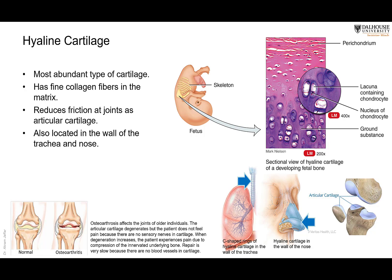In the adult, hyaline cartilage is present in several locations: the C-shaped rings of the trachea to keep it always open for inhalation, the movable part of the nose for protection, and mainly as articular cartilage. The articular surfaces of joints have smooth areas covered by cartilage — called articular cartilage because it is present in a joint. Most of it is hyaline cartilage, providing a smooth surface to reduce friction and enduring stress more than dense connective tissue.